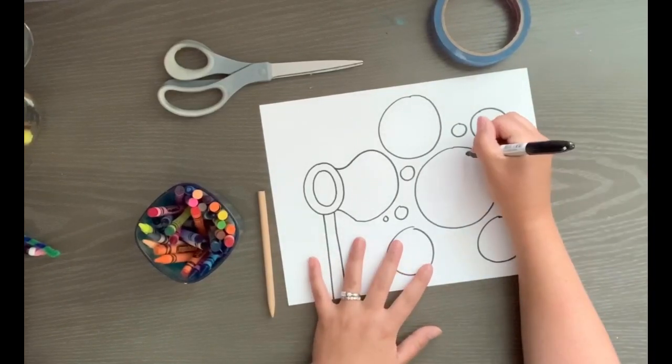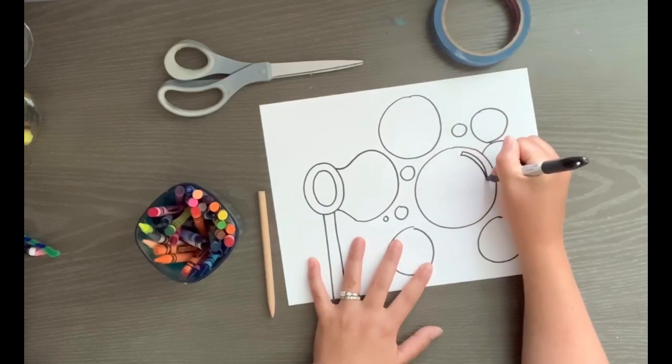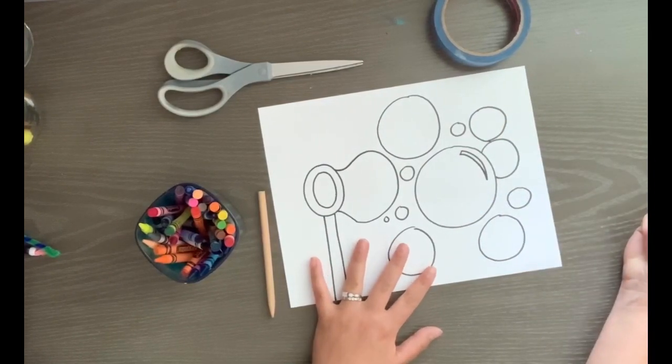After I've drawn all my bubbles, I'm going to add a highlight. This is where the light shines on my bubble. It is a long skinny triangle.